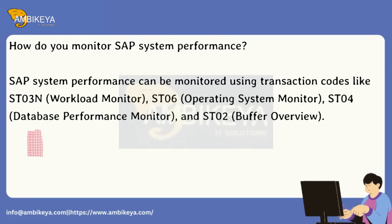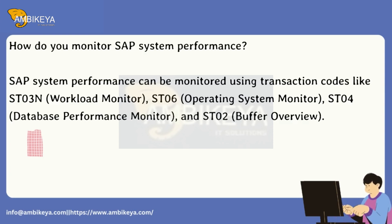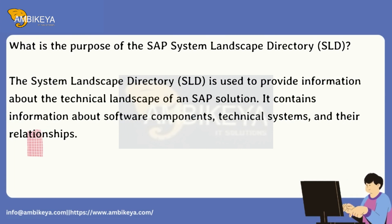How do you monitor SAP system performance? SAP system performance can be monitored using transaction codes like ST03N (workload monitor), ST06 (operating system monitor), ST04 (database performance monitor), and ST02 (buffer overview).